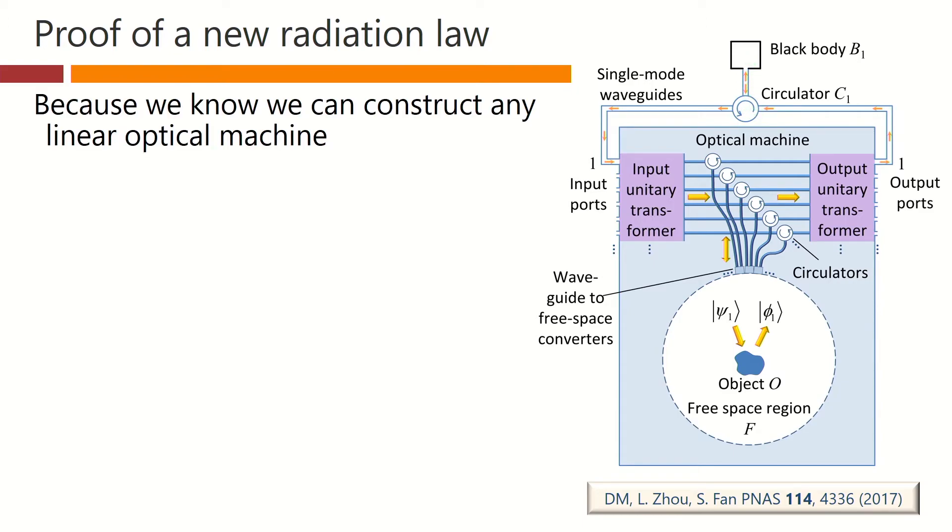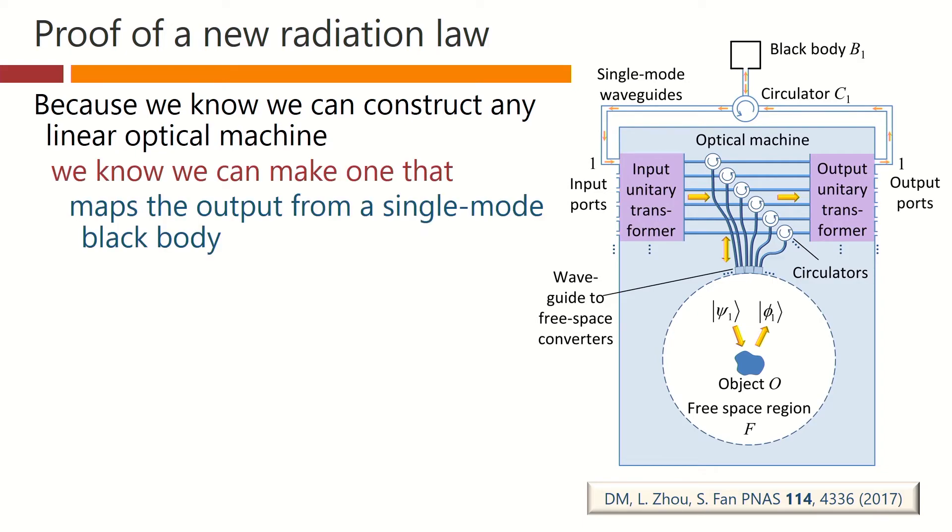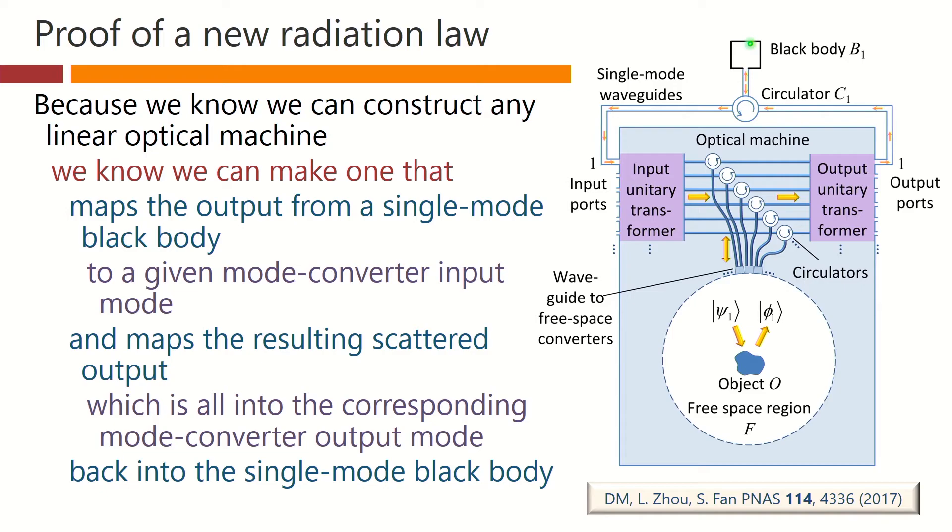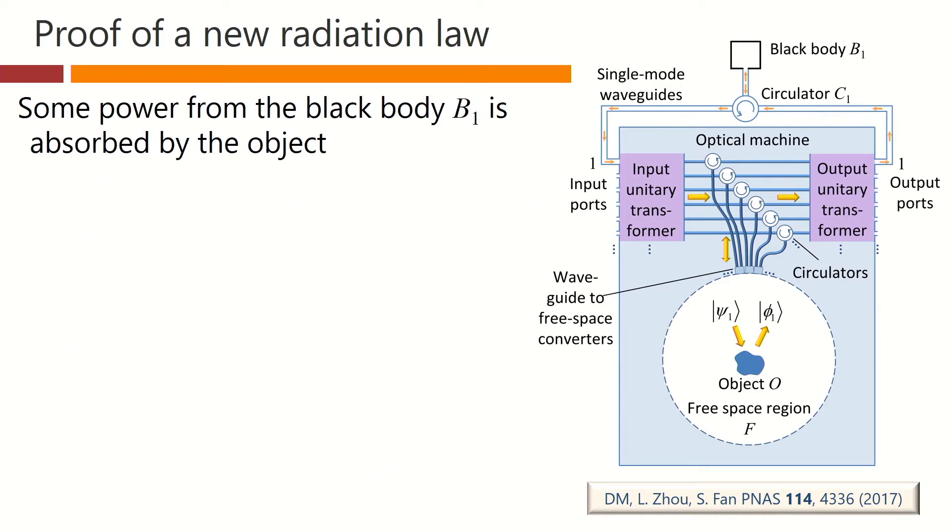So, because we know we can construct any linear optical machine, we know that we can make one, like we've been describing, that maps the output from the single-mode black body to a given mode converter input mode to be instant on the object. And it maps the resulting scattered output, which is all into this corresponding mode converter output mode, back into the single-mode black body. As I said, some power from the black body is absorbed by the object, and the rest is scattered back to the black body.